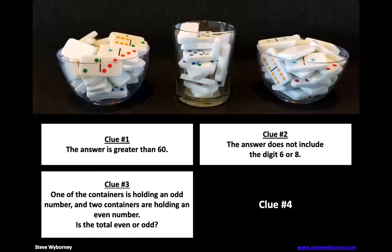Okay. Are you ready? Clue number three. One of the containers is holding an odd number and two containers are holding an even number. So is the total even or odd? That's an interesting clue. So it's not telling us right away. We've got to do some problem solving. So we know that there's two even numbers and one odd number. So in your head or on a piece of paper, I want you to pick any two even numbers and pick one odd number and see if you come up with an even number or an odd number.